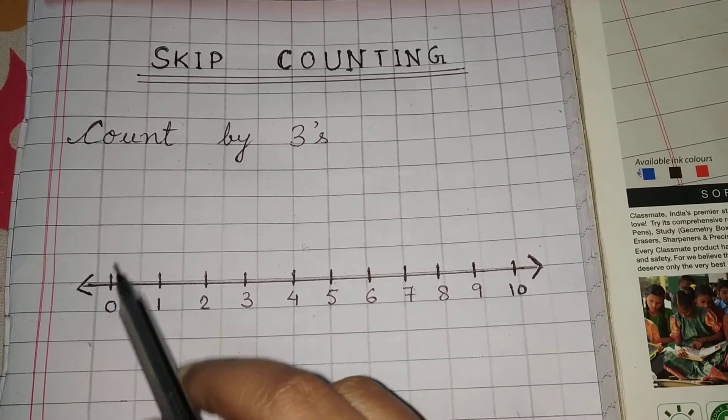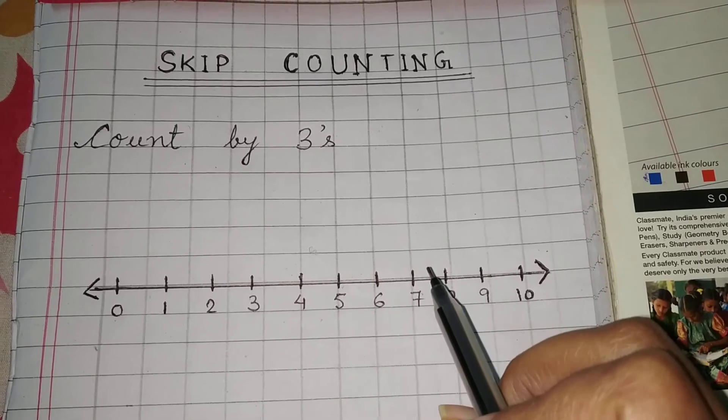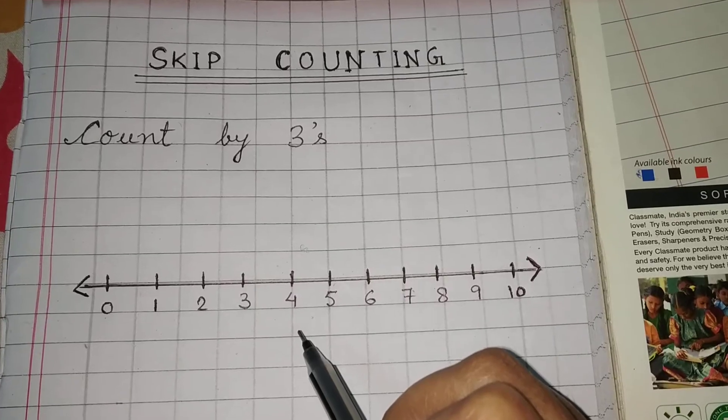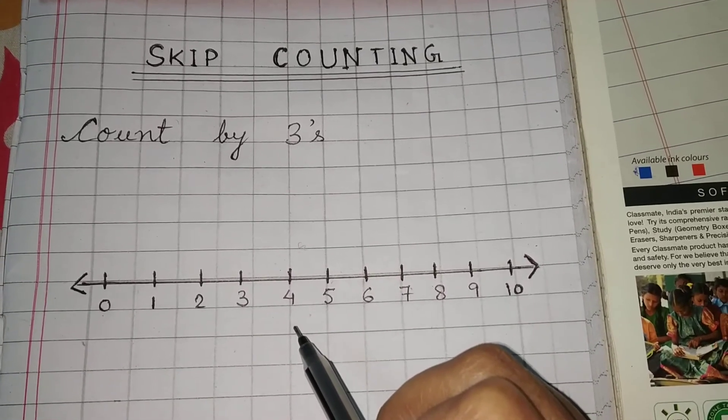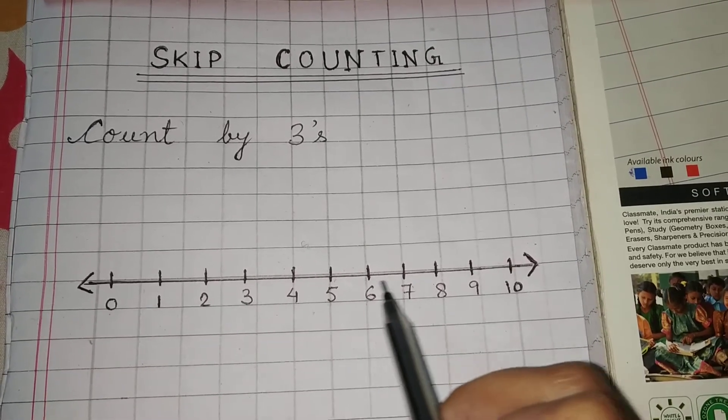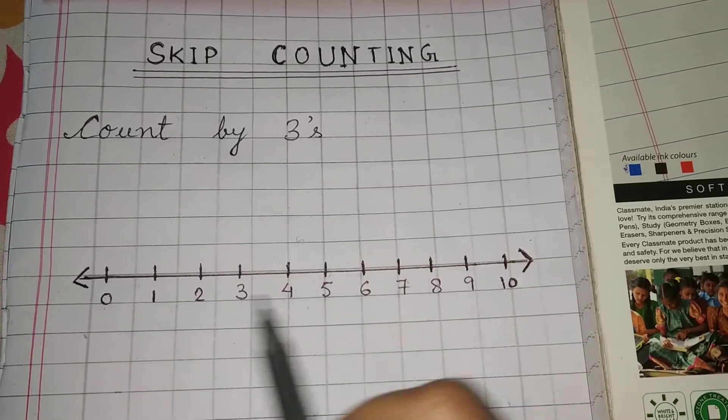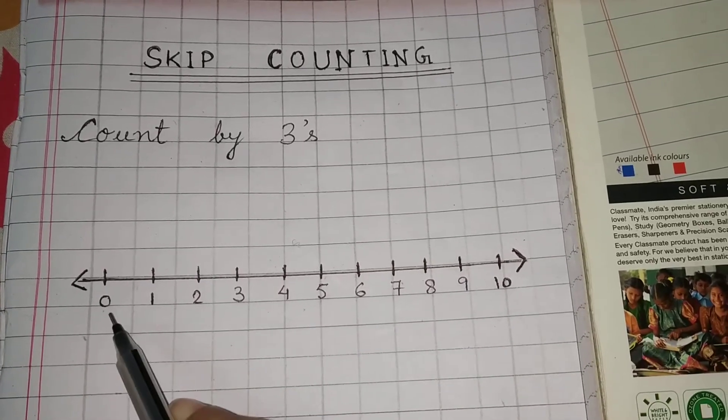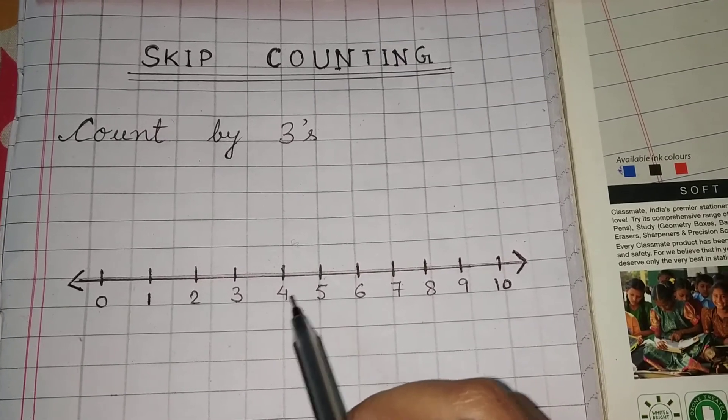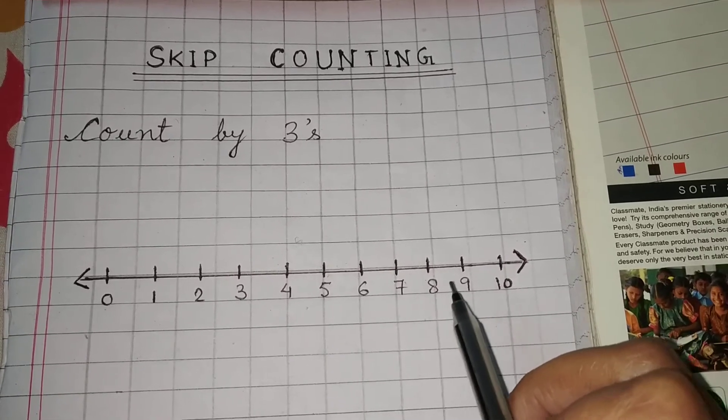And again from three we have to count one, two, three, and like this we will do the skip counting by three. Now see how I am doing. As you can see here, I have drawn the number line which starts from number zero to ten: zero, one, two, three, four, five, six, seven, eight, nine, and ten.